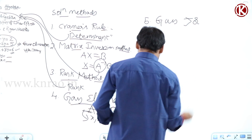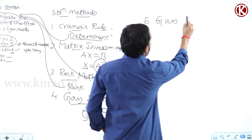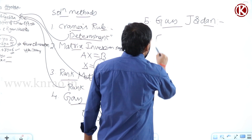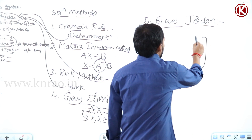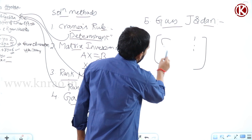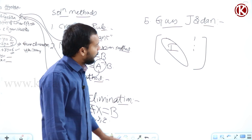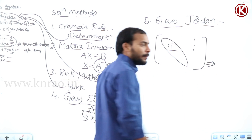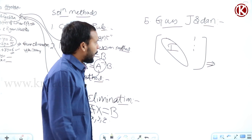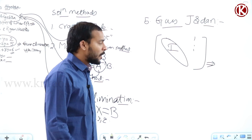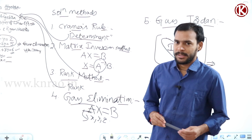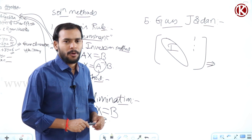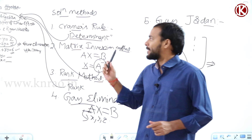The fifth method is the Gauss-Jordan method. In this method, we consider the augmented matrix along with the constants and convert the coefficient matrix part into unit matrix form. From this form, we can directly get the values of the unknowns. To achieve this form, we perform row operations.